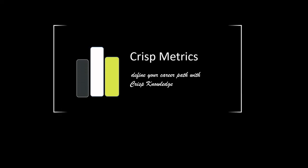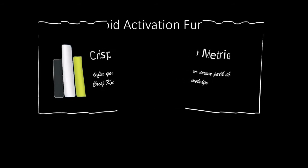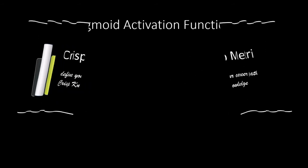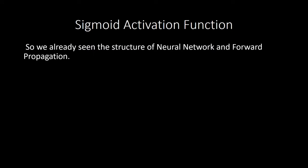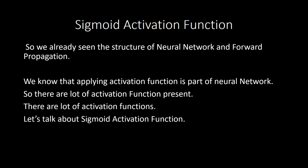Welcome to the CRISP Metrics. In this video we will talk about the sigmoid activation function. In the previous video we saw forward propagation — specifically step 2 of a neuron, where it applies an activation function. There are a lot of activation functions, so let's talk about the sigmoid activation function.